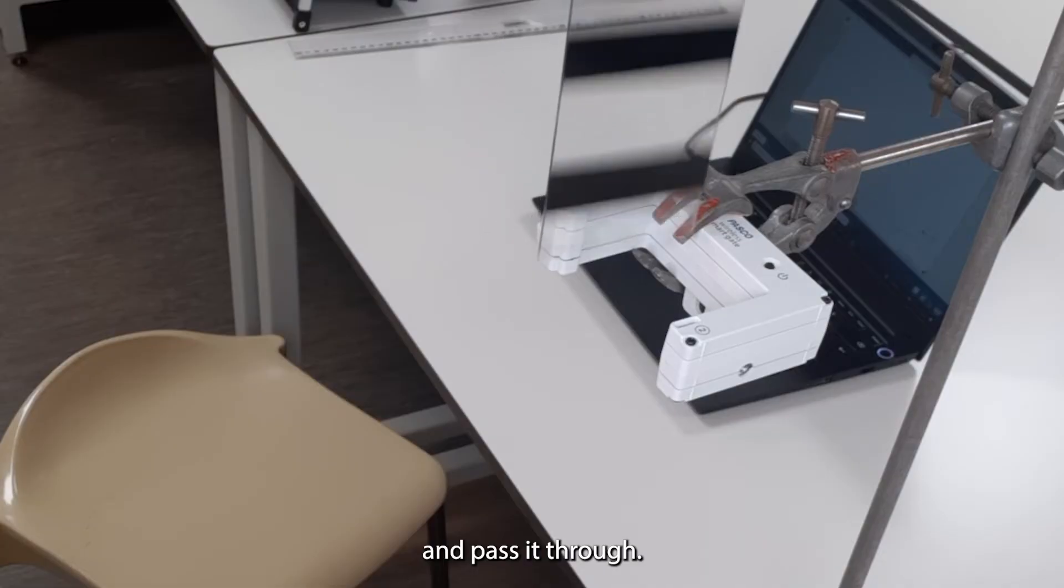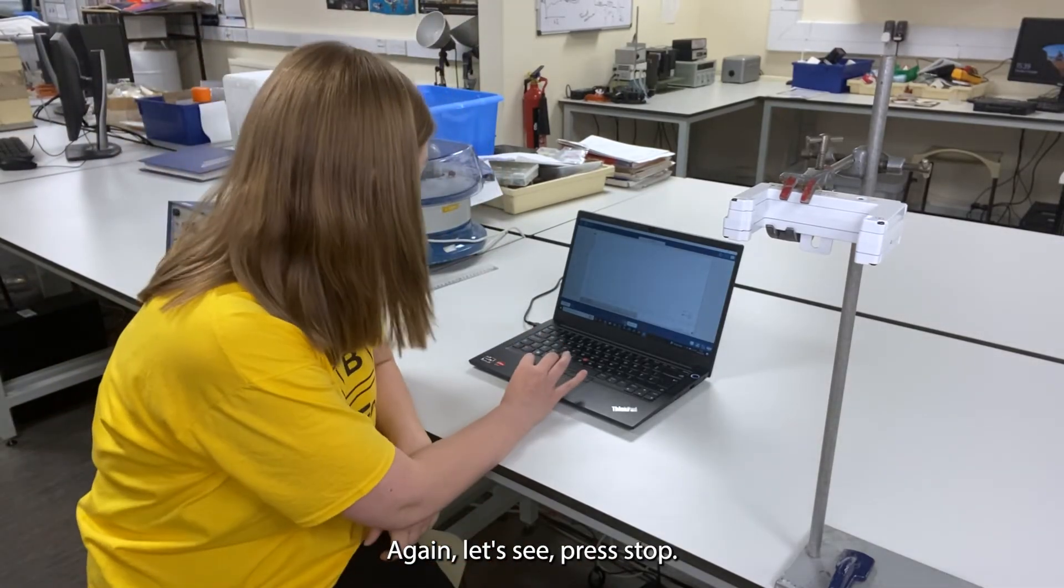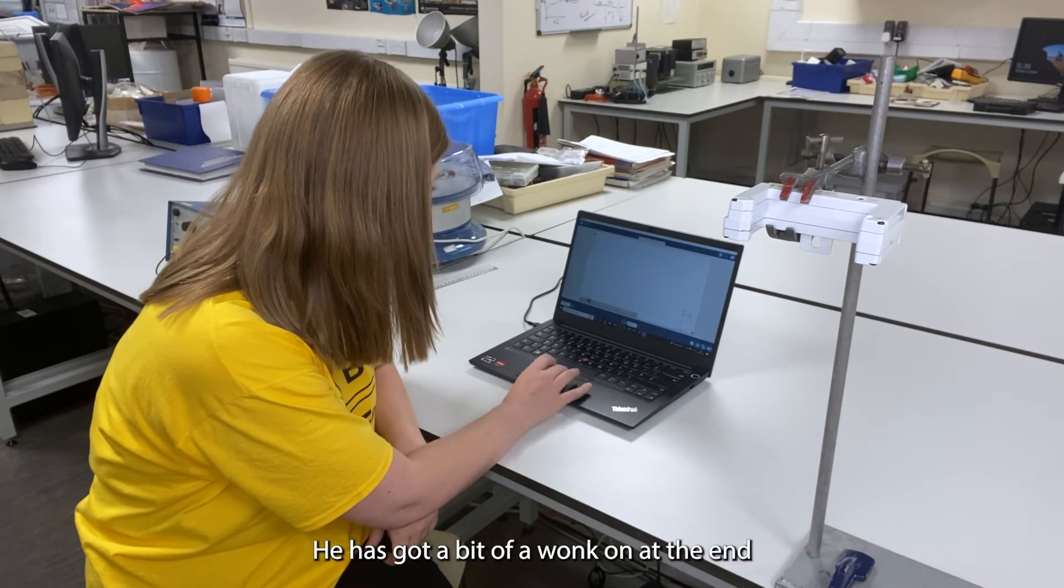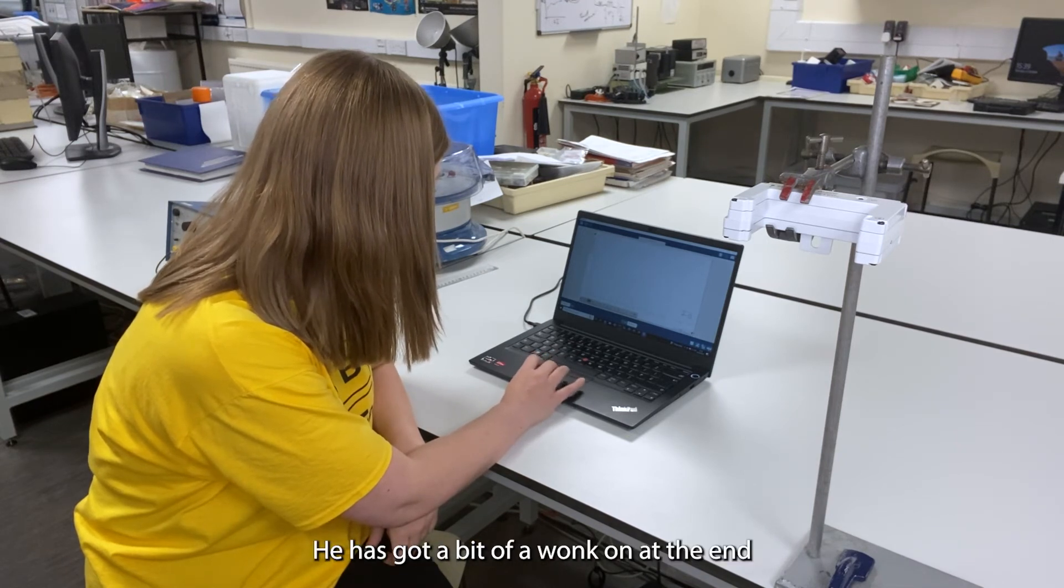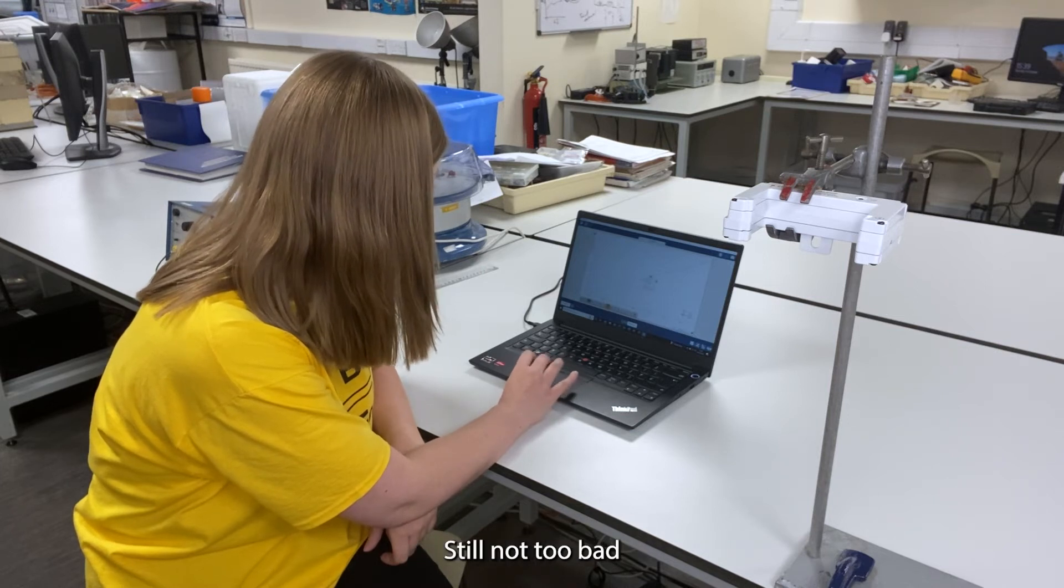So values for g in meters per second squared. Let's try again. Press start again and pass it through. Oh, definitely rotated that time so it might not be very accurate again. Let's stop. Yeah, it's got a bit of a wonk on the end. Let's linear fit it and have a look. 9.89, still not too bad.